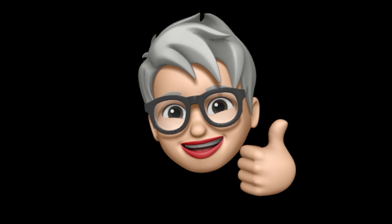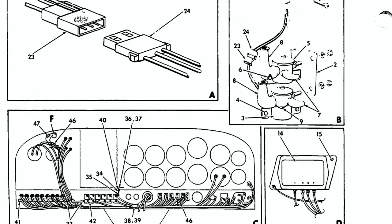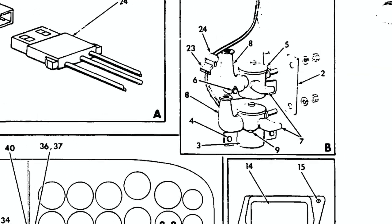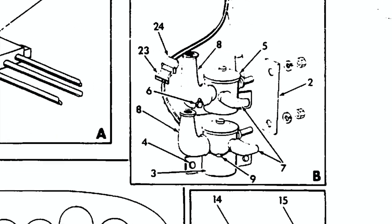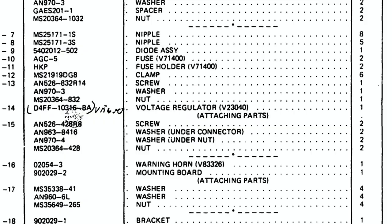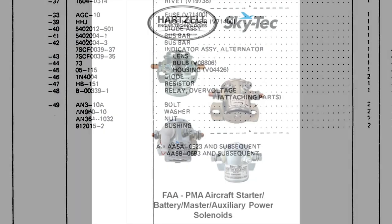If you go to the maintenance manual, you can find the diagram that shows we have a relay on the firewall stacked right above another relay, and there's a diode assembly that goes across the master relay — it's part number 9 in the diagram. When you look it up, the diode assembly has part number 5402012-501. There's also a fuse and fuse holder, and another diode assembly located elsewhere on the aircraft, but when they give you a part number for the diode, they don't tell you what it is.